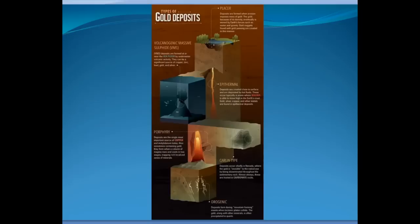Not every gold deposit is of the same type. There are different ones, and the most common that most prospectors will look for is placer — a surface deposit formed by the weathering and erosion of hard rock deposits deep below the surface. There are several types shown here: volcanogenic massive sulfide, epithermal, porphyry, Carlin type, and orogenic.